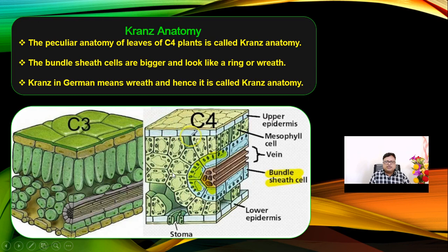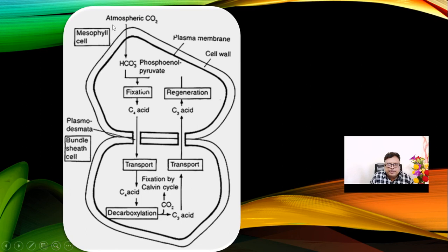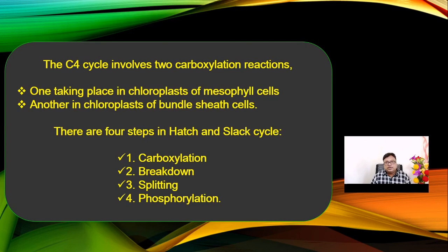In mesophyll cells and bundle sheath cells, two different types of chloroplasts can be found. In a single chloroplast: grana portion handles light reaction, stroma handles dark reaction. The atmospheric CO2 is trapped in the mesophyll cell, and the first product synthesized is phosphoenolpyruvate (PEP). CO2 is fixed in a C4 acid — a 4-carbon acid — then transported to the bundle sheath cells, where it is fixed via the C3 cycle. After fixation, regeneration takes place again in the mesophyll cell. The photosynthetic reaction is the same but there are two types of reaction centers.